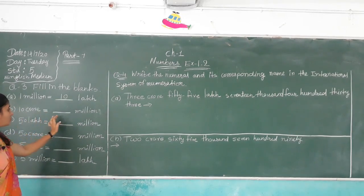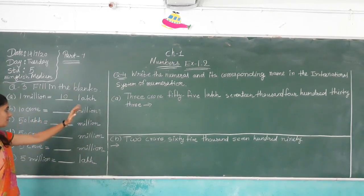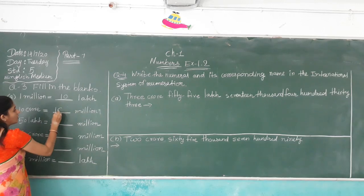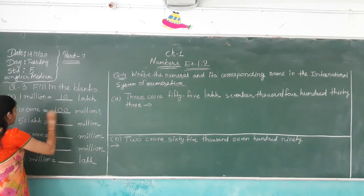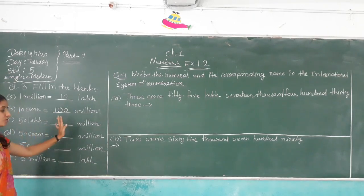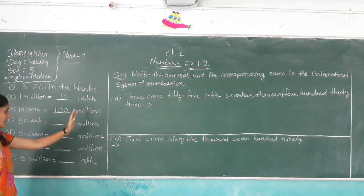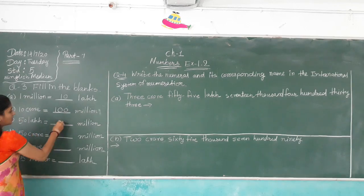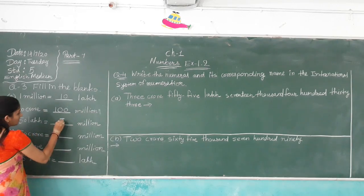10 crore is equal to blank million. 10 crore is equal to 100 million. 50 lakh is equal to blank million. 50 lakh is equal to 5 million.